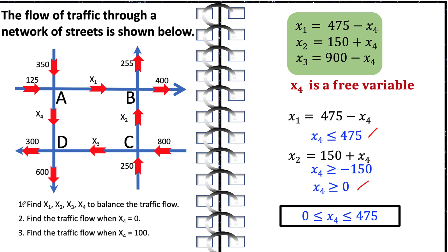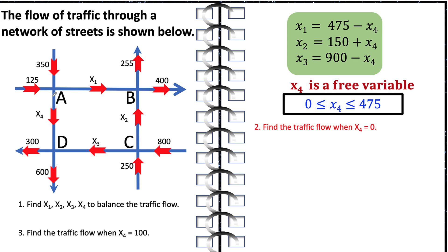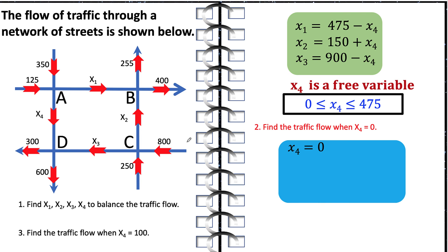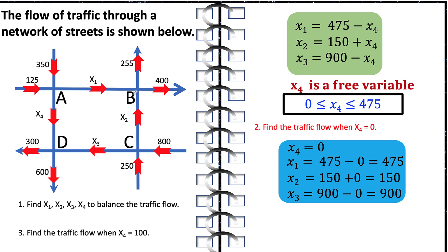This restriction is our answer for question number one. The values of x1, x2, and x3 depend on x4, which is restricted to 0 ≤ x4 ≤ 475. Any value of x4 in this domain substituted into the expressions will give valid values for x1, x2, and x3. For question two, when x4 equals 0 — meaning we close road AD due to construction — then x1 equals 475, x2 equals 150, and x3 equals 900. All of these will balance the traffic flow in the network.